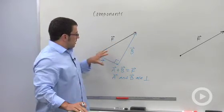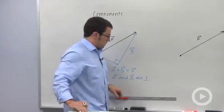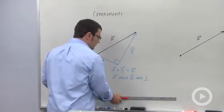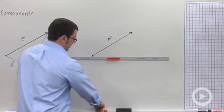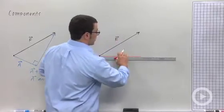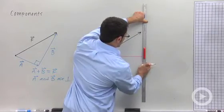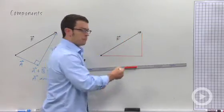But one of the things that we're going to need to be able to do is to find horizontal and vertical components. So those are very specific components. And, of course, you're guaranteed to get components if you take a horizontal and vertical vector that add up to your original vector F.